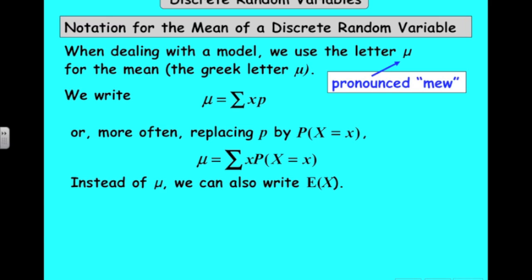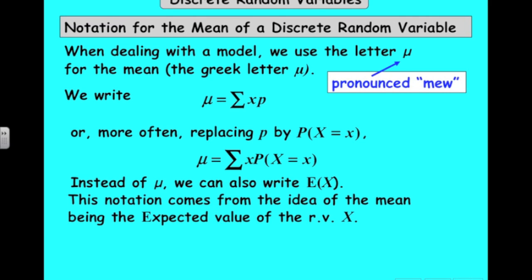You'll see that instead of mu we often use E(x), meaning the expected value of the random variable.